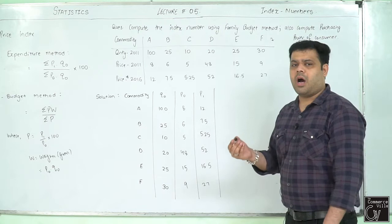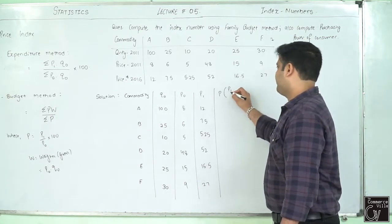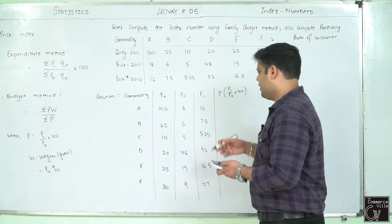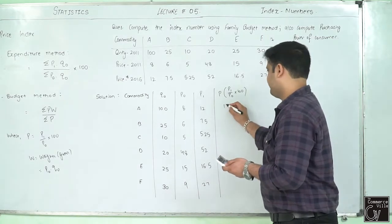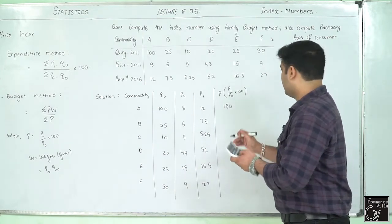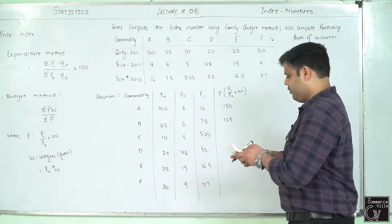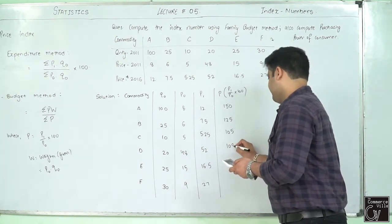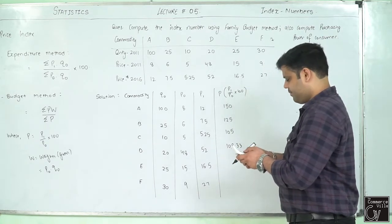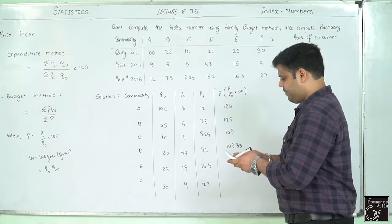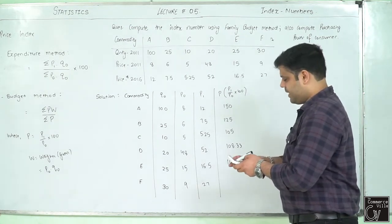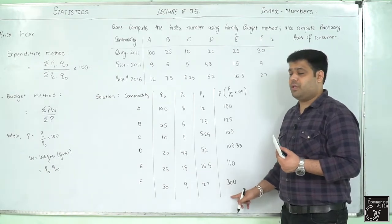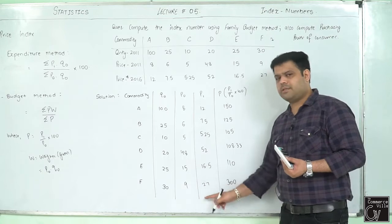First we need P, or R, or I. P1 by P0 into 100. After this we won't multiply by 100 in the formula. 12 by 8 into 100 is 150. 7.5 by 6 into 100 is 125. 5.25 divided by 5 into 100 is 105. 52 divided by 48 into 100. 16.5 by 15 into 100 is 110. 27 by 9 into 100. You can see, from 9 to 27, it's 300. If something worth 100 becomes 300, it's three times.